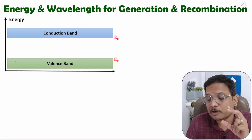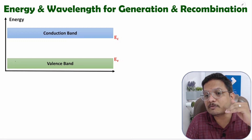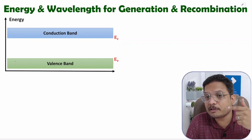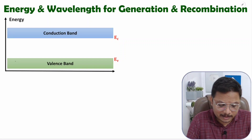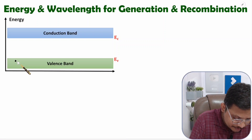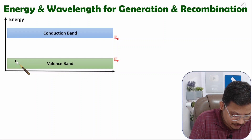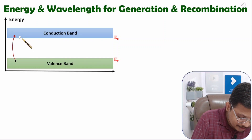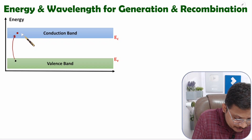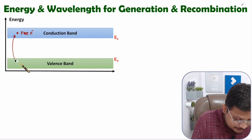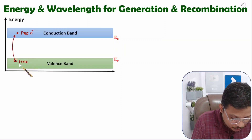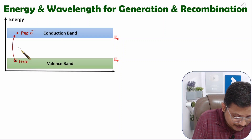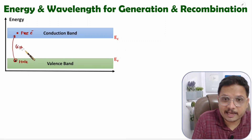As we apply energy to valence electrons, those electrons will be excited and will move inside the conduction band. Consider here we have one electron and we are applying some energy to this electron. This electron will now move inside the conduction band — it will be a free electron in the conduction band. And instead of the electron, there will be a vacant space, referred to as a hole. This process is referred to as generation, GTH.